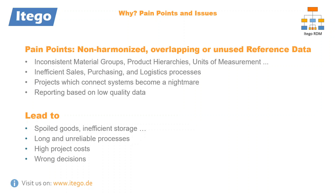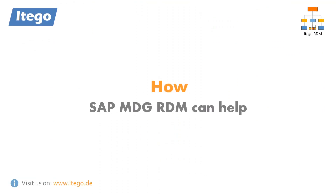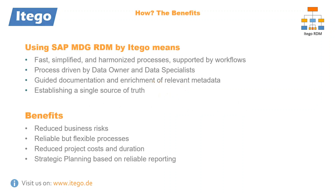This is why we are now going to take a look at how ITEGO RDM prevents these issues, including the benefits and solution components. Using ITEGO RDM will in general result in faster, more simple and harmonized processes and therefore in higher quality data. It also means having a workflow process driven by data owners and specialists, having guided documentation and the opportunity to enrich objects with metadata, and ultimately establishing a single source of truth for all of your reference data. This will result in several benefits including reduced risks for any kind of decision making, reliable and flexible processes, reduced project costs and duration, and in general allows for reports of a higher quality resulting in better strategic planning.